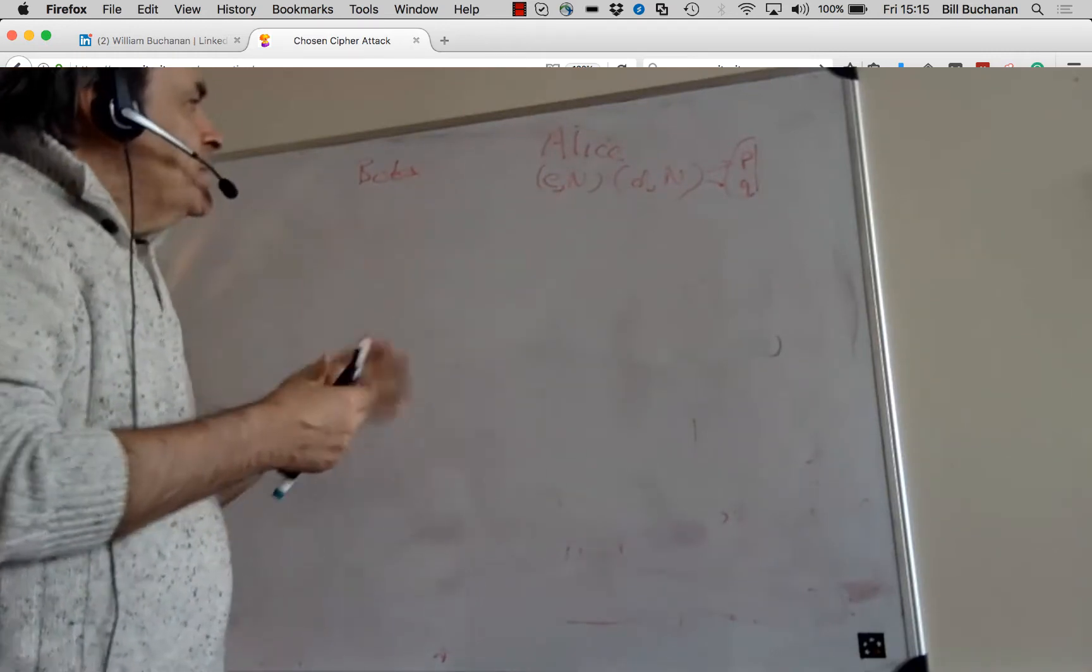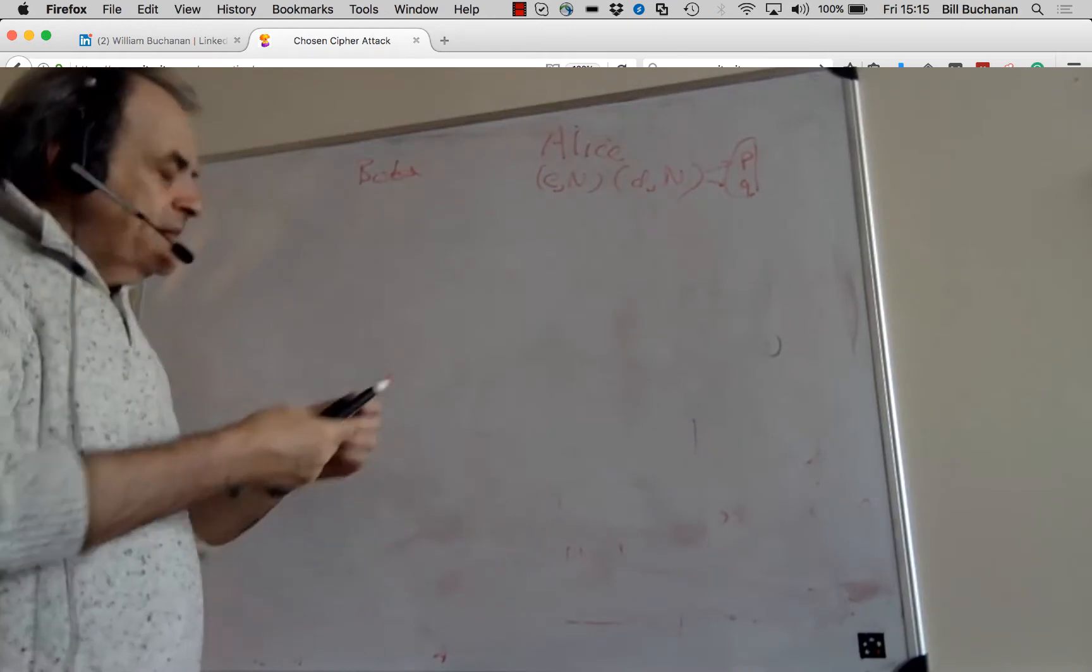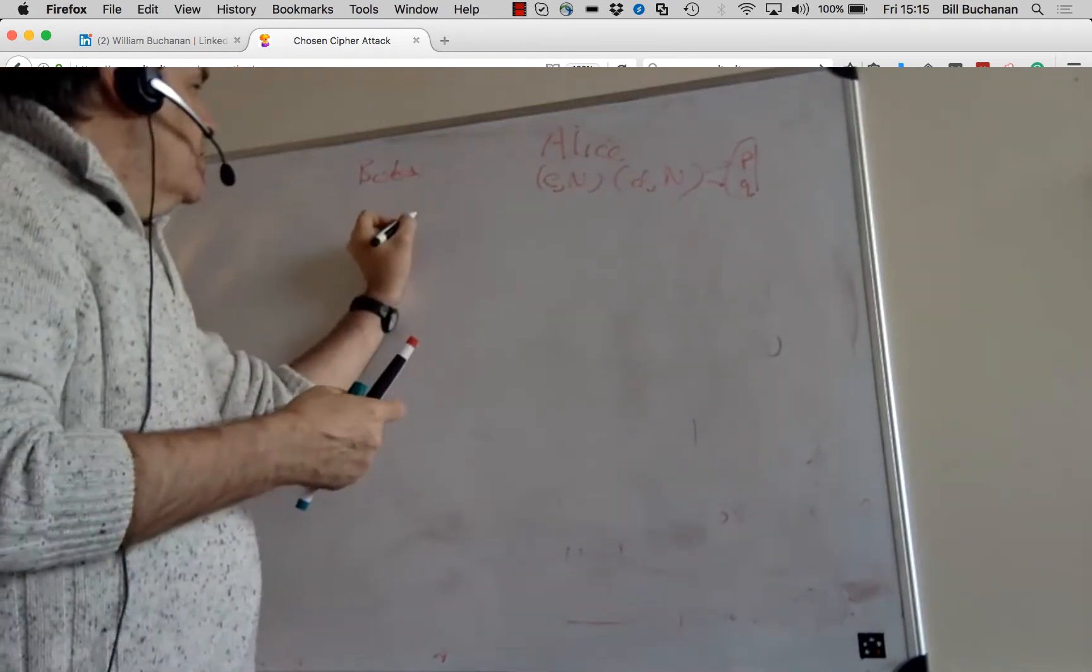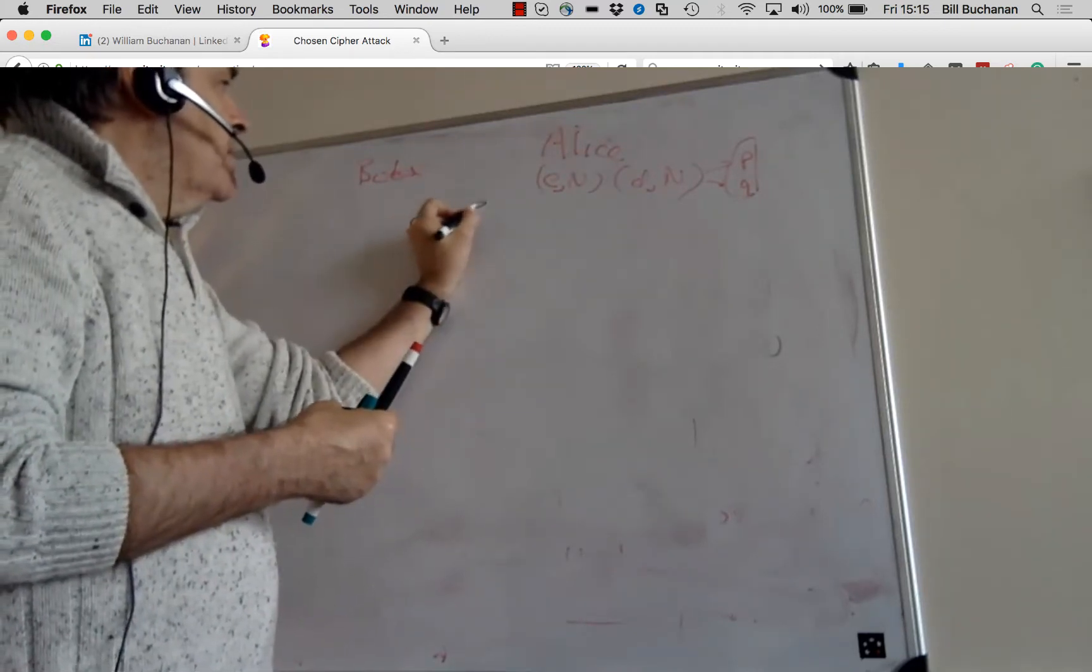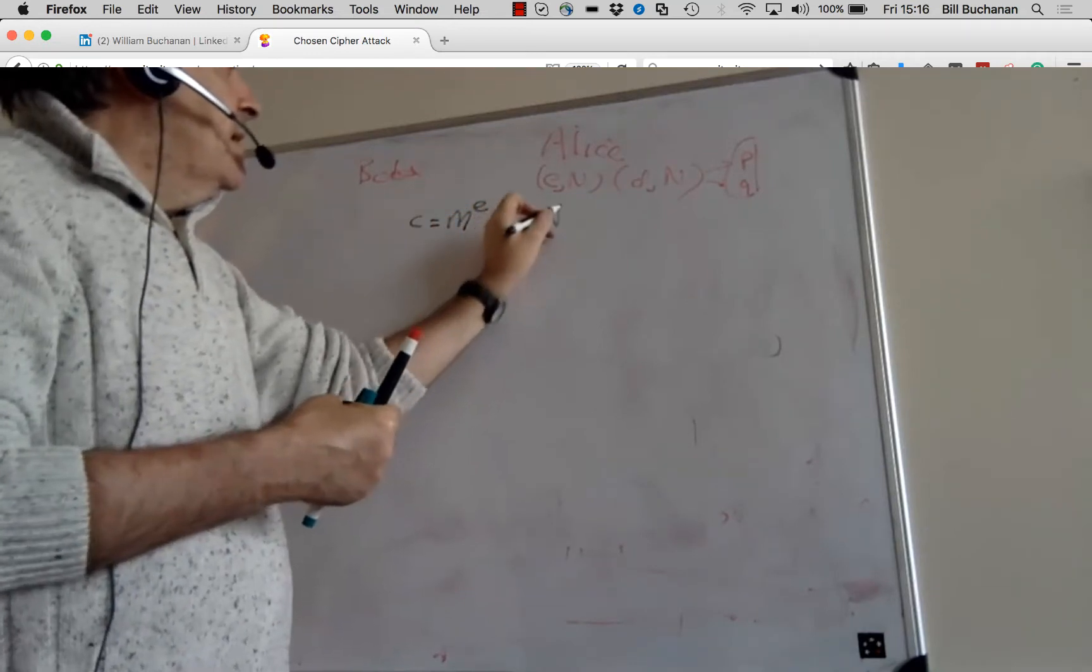Alice distributes to Bob the value of E and N, and then Bob will encrypt with that. So if we send a cipher, then it will be the message to the power of E mod N.